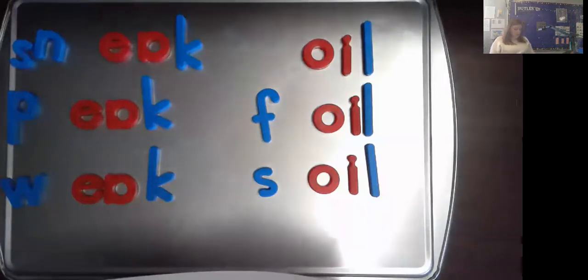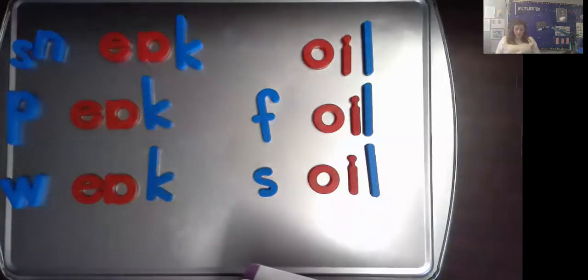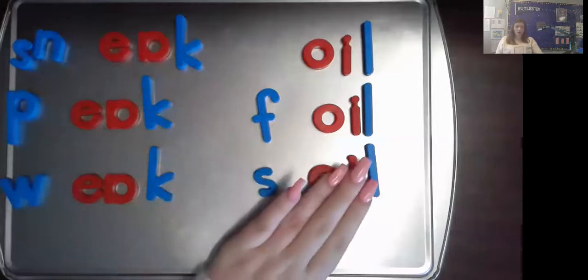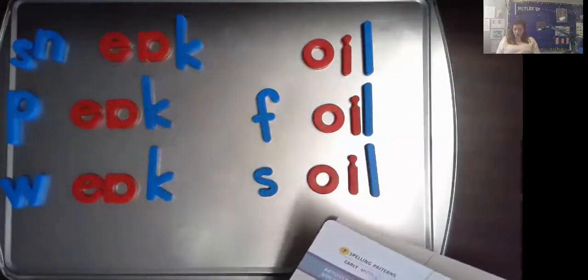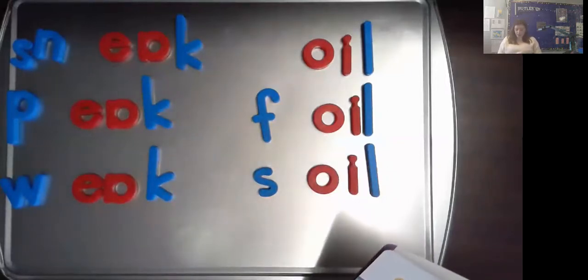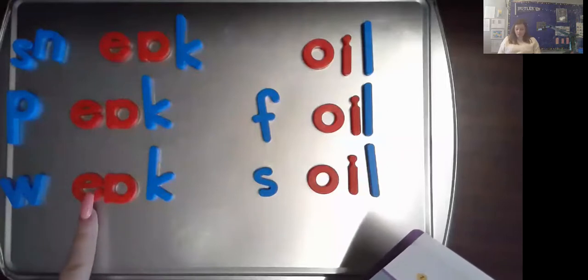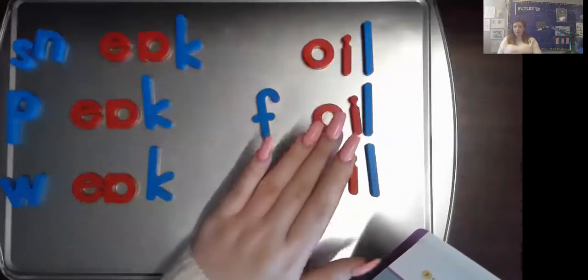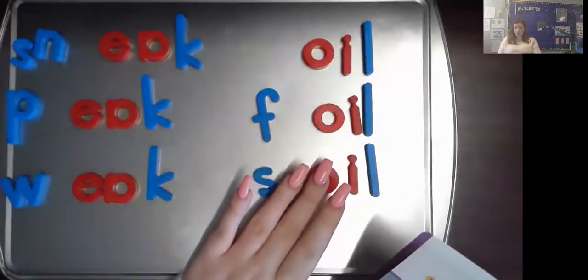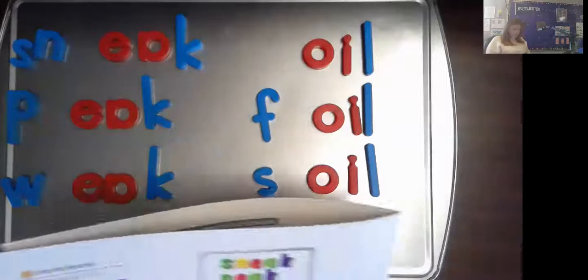As you notice, some words have two vowels together. They're called vowel combinations. So the E-A and the O-I, these are vowel combinations. Sometimes the combination sounds like the name of the first vowel, like in sneak, peek, weak, to eek, you hear the E. And sometimes it stands for a different sound, like oil, foil, and soil. The oil, oi.